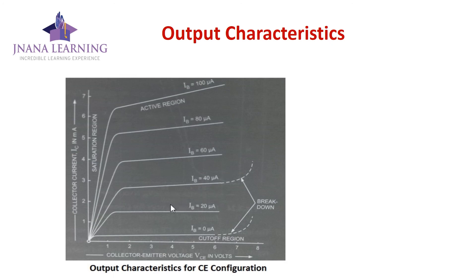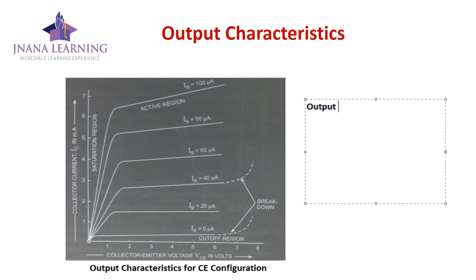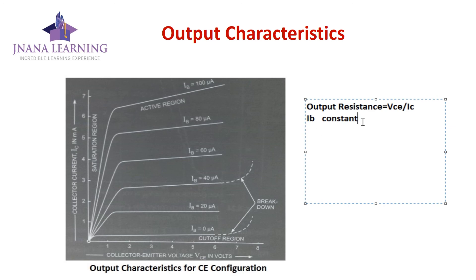Similar to common base configuration, we can find the output resistance from the output characteristics. The output resistance is the ratio of the change in collector-emitter voltage to the change in collector current — delta VCE divided by delta IC — keeping the base current constant. That concludes the output characteristics for common emitter configuration.